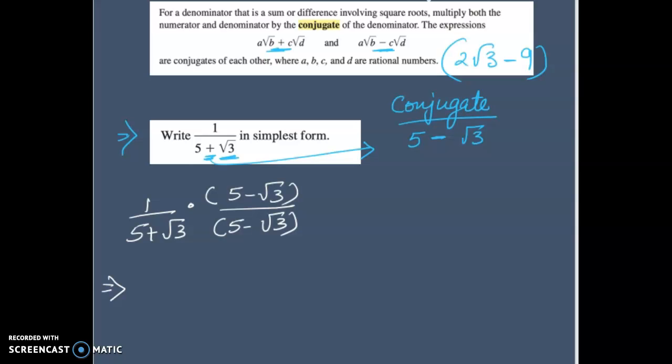This will help us to eliminate radical from the denominator. If we simplify it, 1 times 5 minus radical 3 will be 5 minus radical 3. And 5 plus radical 3, 5 minus radical 3. It brings to this property which says a plus b times a minus b is nothing but a squared minus b squared. And this property will come to our rescue.